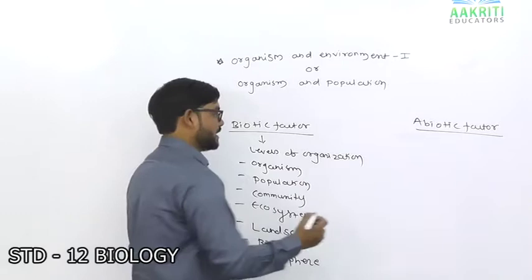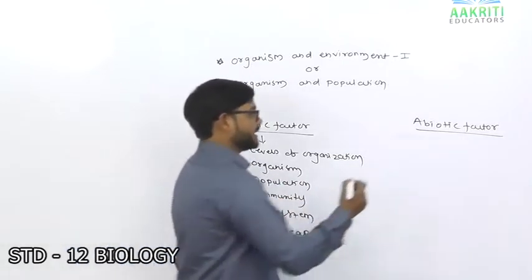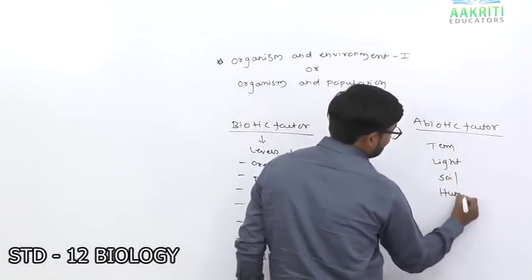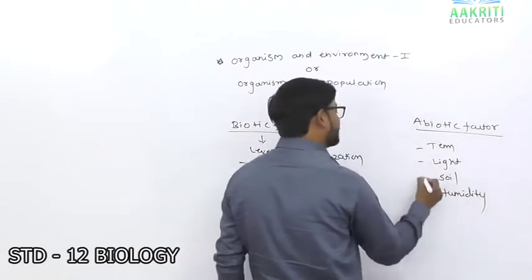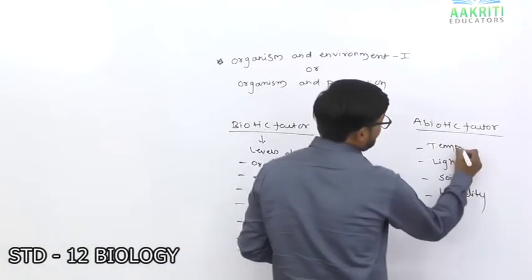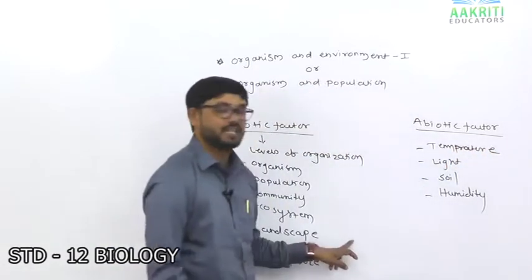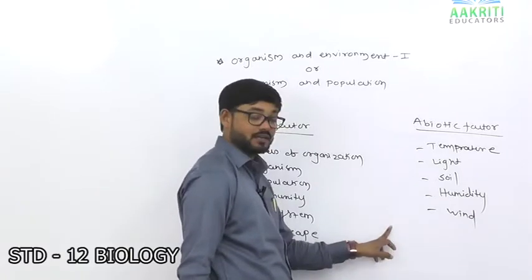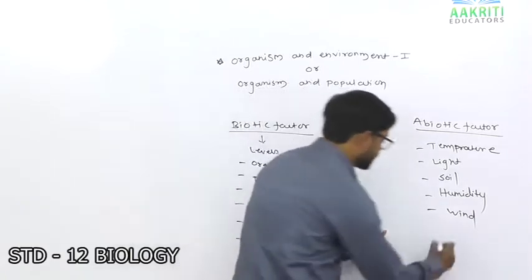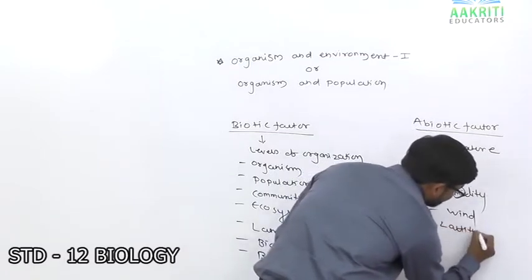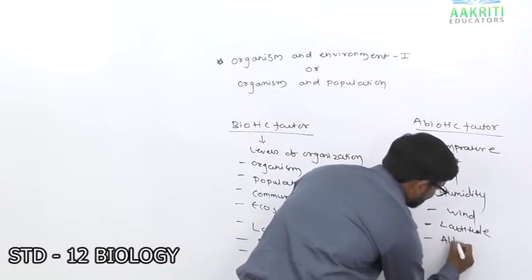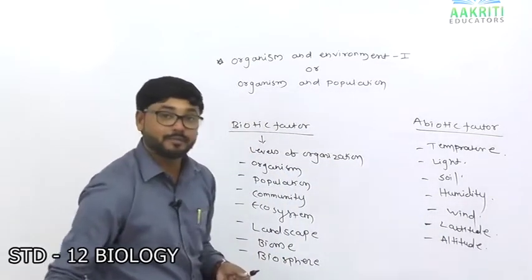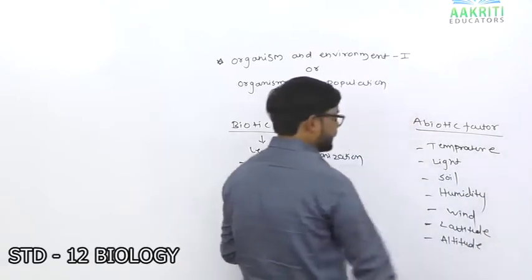Abiotic factors are very important: temperature, light, soil, humidity, wind — all very important. Also very important are latitude and altitude. So that means many factors are here — temperature, light, soil, humidity, wind, latitude, and altitude — these are the abiotic factors.